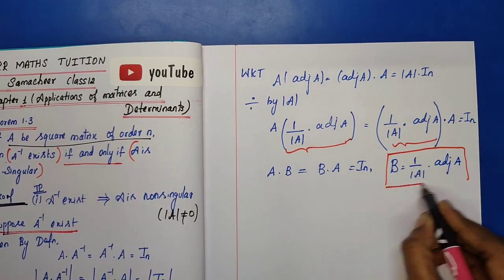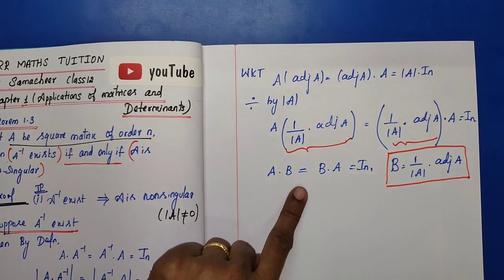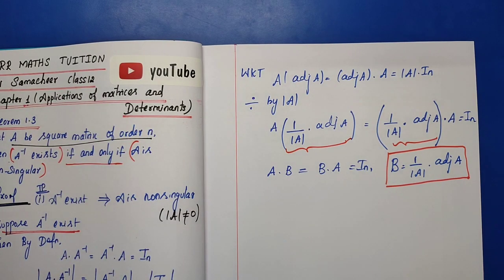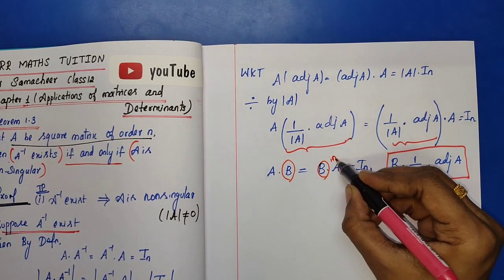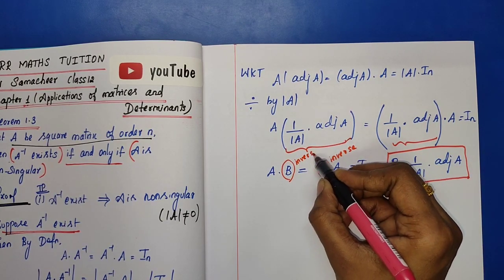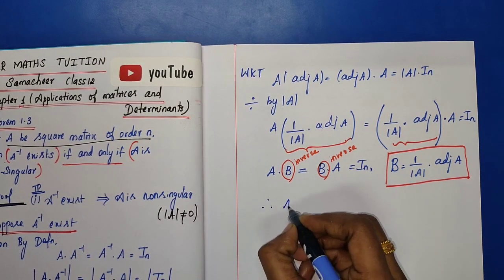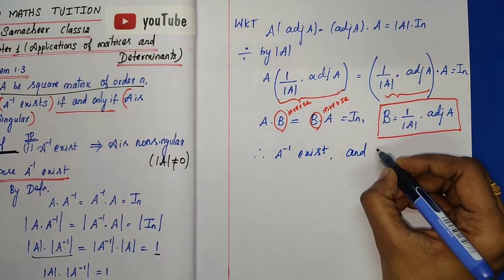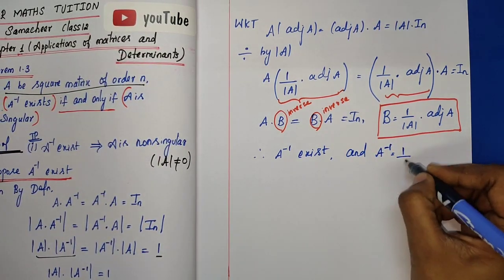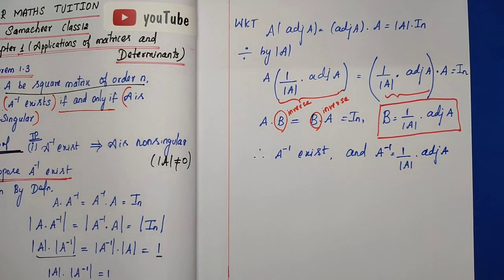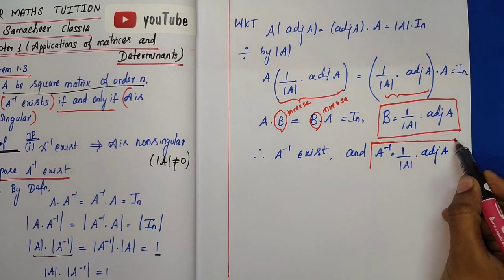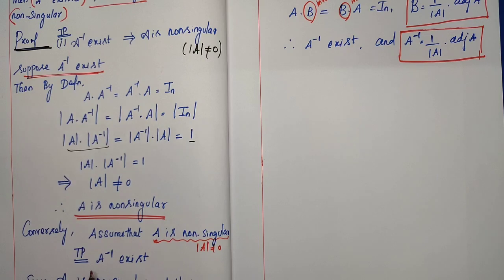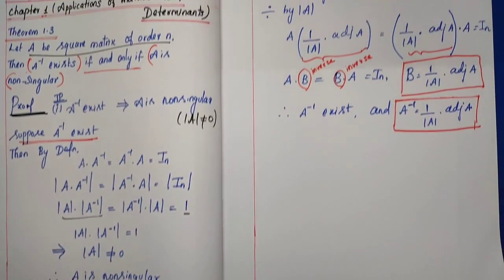This matrix B satisfies B·A = A·B = I_n, which by the definition of inverse matrix means B is the inverse of A. Therefore A inverse exists, and A inverse equals (1/determinant(A)) times adjoint(A). Hence, A is non-singular implies A inverse exists.